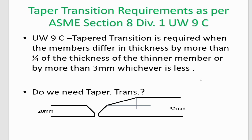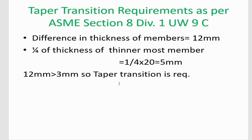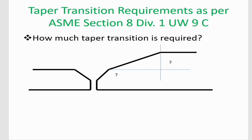Since one-fourth of the thickness of the thinner member is 5 mm, which is greater than 3 mm, we take 3 mm as the governing value for the determination of taper transition. Since 12 mm is greater than 3 mm, taper transition is required.